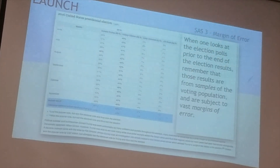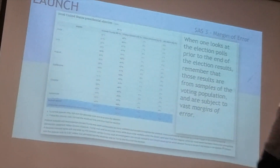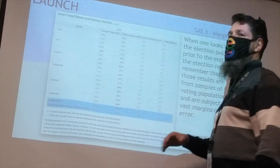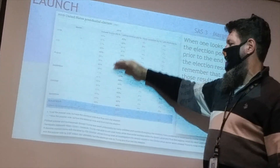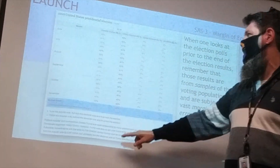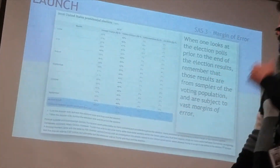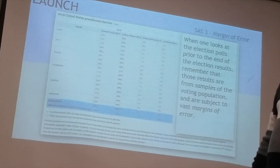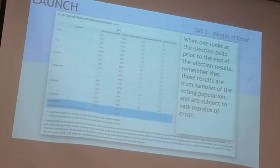Election poll results are from samples of the voting population and are subject to large margins of error. Looking at the 2016 election polls from June through November, Hillary Clinton was consistently shown ahead of Donald Trump by around 2%. We all know who won that election. Poll results are not always accurate, as the most recent election also demonstrated. Be sure to complete your assignments in the Schoology classroom.